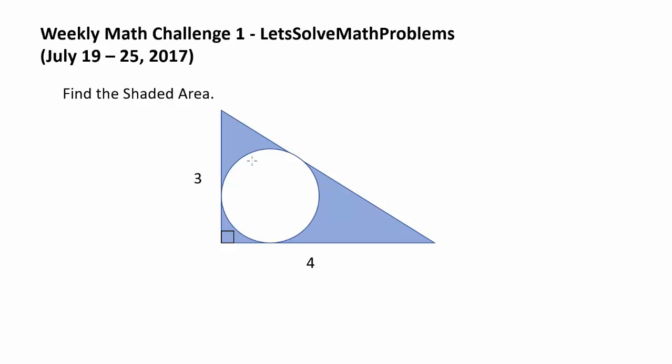Hello, in this video we are going to look at the solution to the first weekly math challenge question. So we have a right triangle and it's going to be a 3, 4, 5 right triangle because 3 squared plus 4 squared is equal to 5 squared. And we want to find the shaded area.